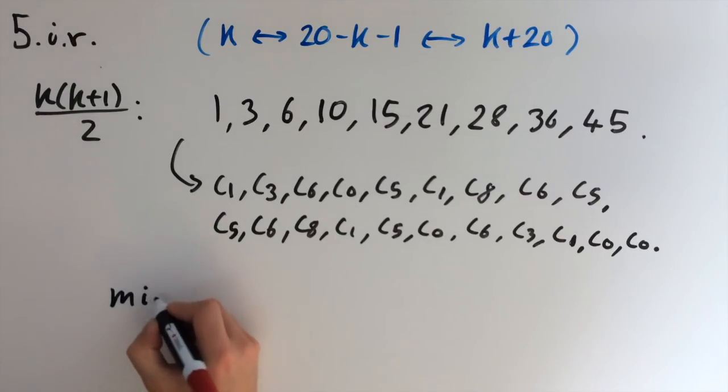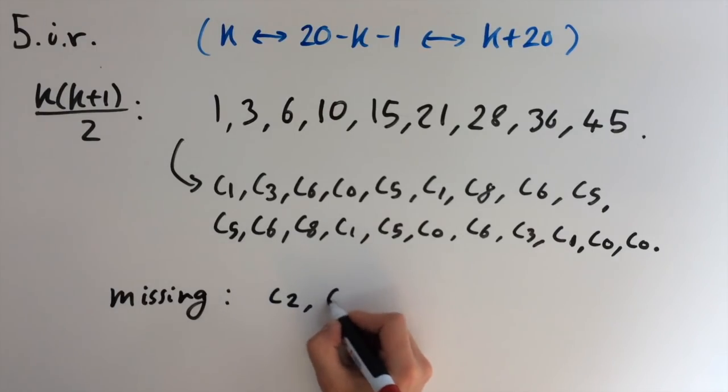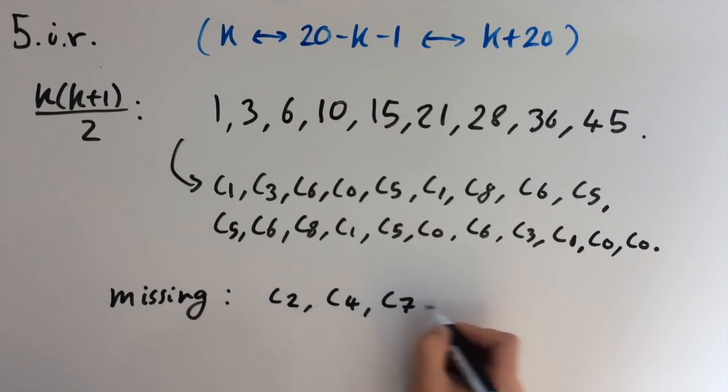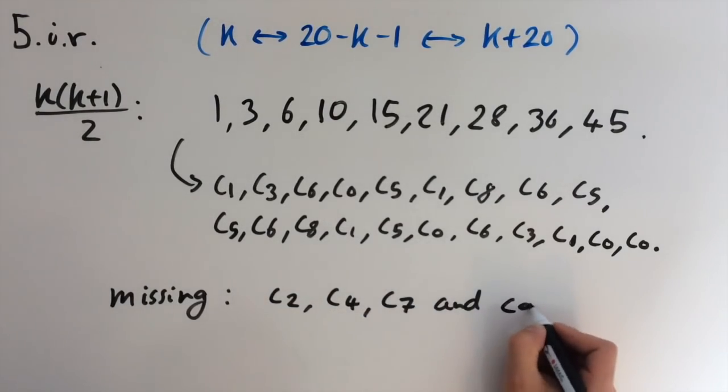So all we need to do is look at the list and see which children are missing. So the missing children are c2, c4, c7, and c9. And that's the answer.